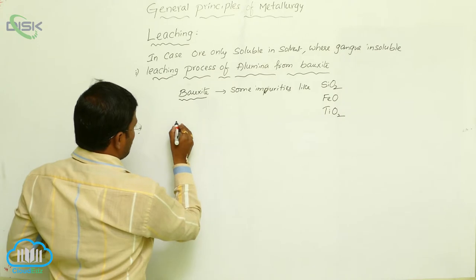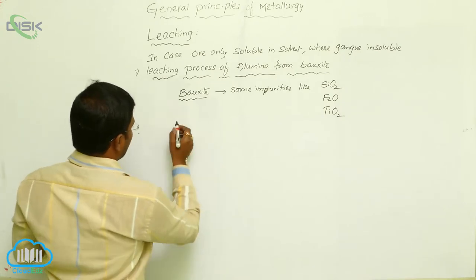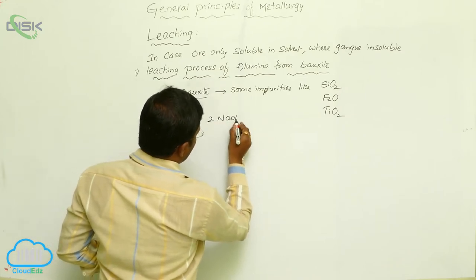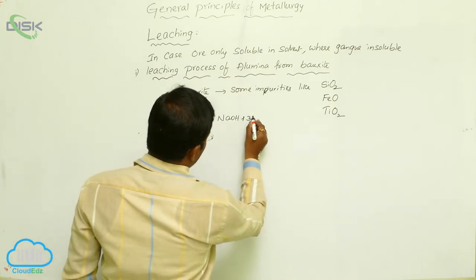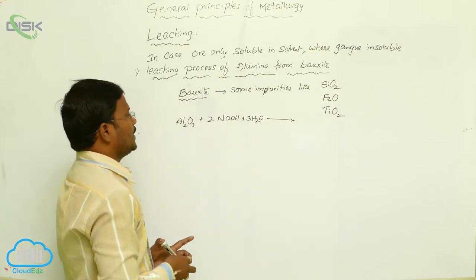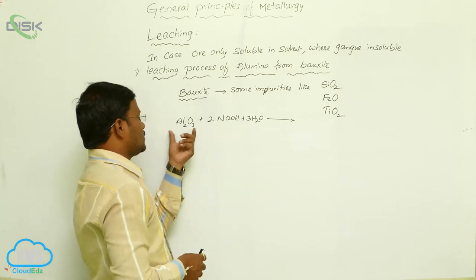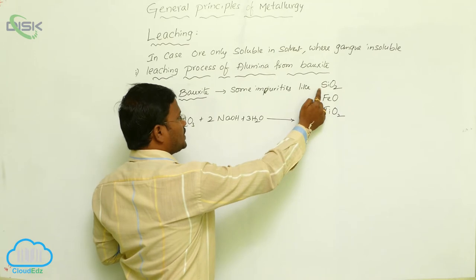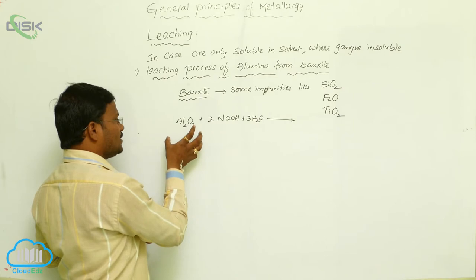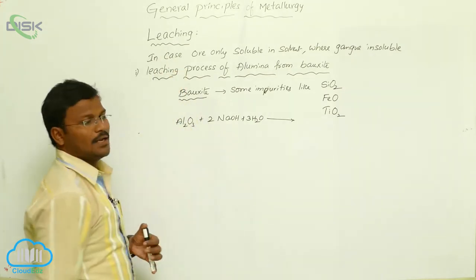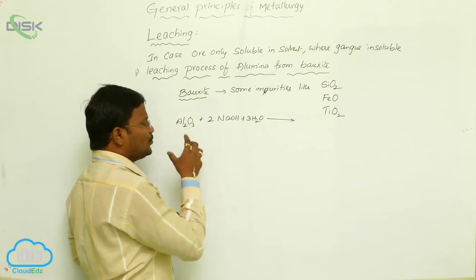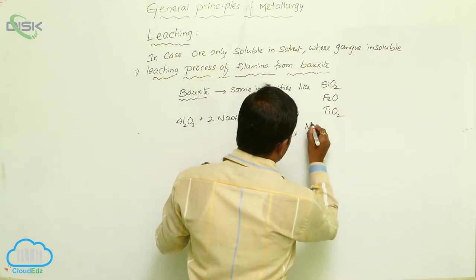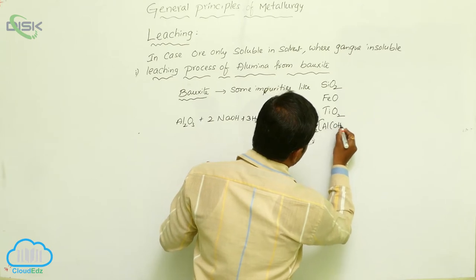In this leaching process, the powdered bauxite (Al2O3) is reacted with concentrated sodium hydroxide. Some amount of gangue will be eliminated from the bauxite ore. The impurities — silica, iron oxide, and titanium oxide — that are present with bauxite are eliminated using this leaching process. The powder of bauxite reacts with concentrated sodium hydroxide and produces sodium aluminate, Al(OH)4⁻.